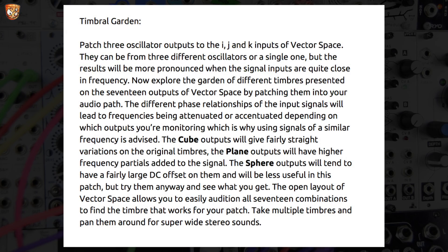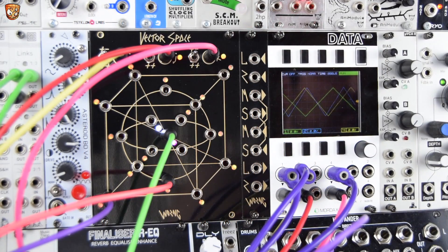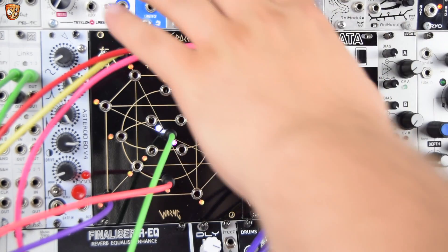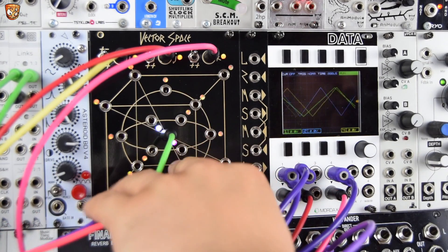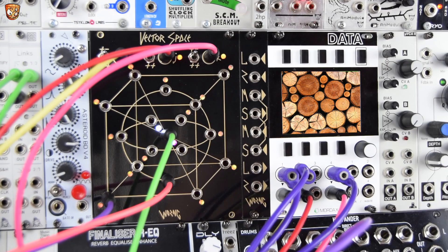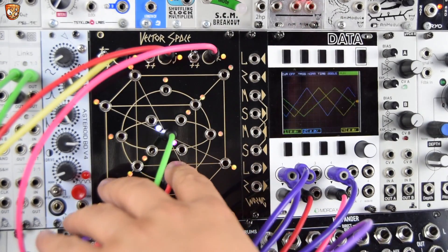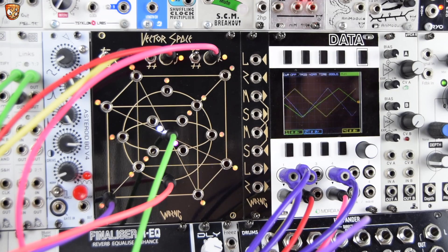This patch is based around the Timbral Garden patch in the manual — I'll overlay that so you can have a look, but go check out the manual afterwards. Just like the left-right mid-side module, the manual is fantastic and that's where these graphics I've overlaid have come from. I have three oscillators coming in tuned to a root, third, and fifth — this has all been sequenced and controlled elsewhere — and I'm using different outputs to give me different audio tones and different timbres.